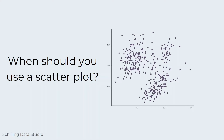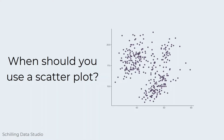Scatterplots are useful for exploring relationships. You need two sets of numbers to make a scatterplot — one set goes on the x-axis and the other goes on the y-axis. Here we're looking at the relationship between bill depth and length for penguins.